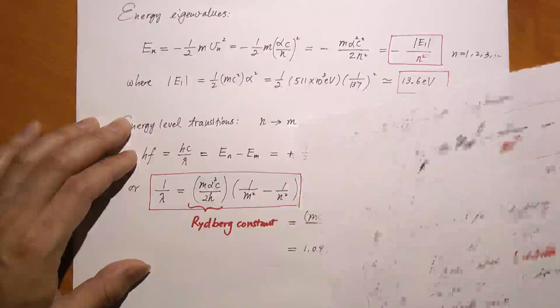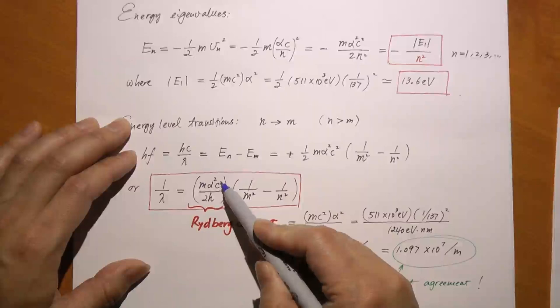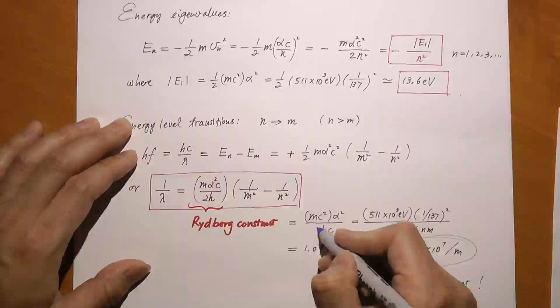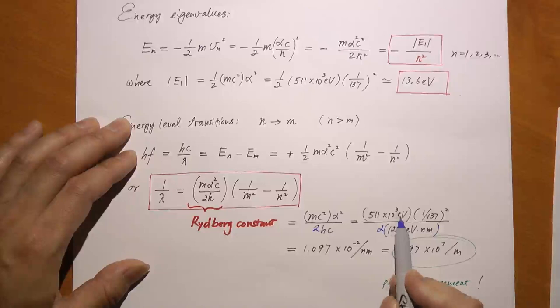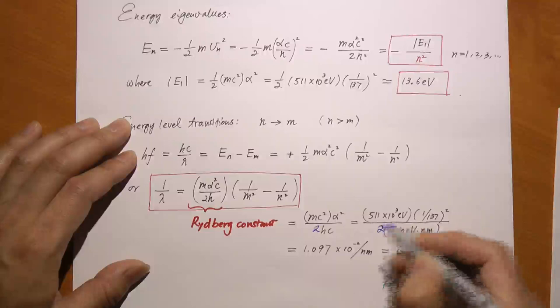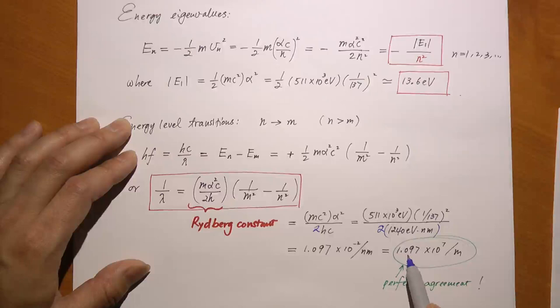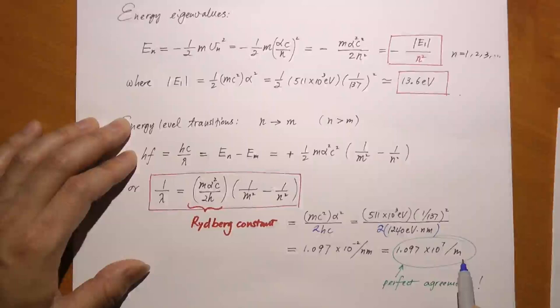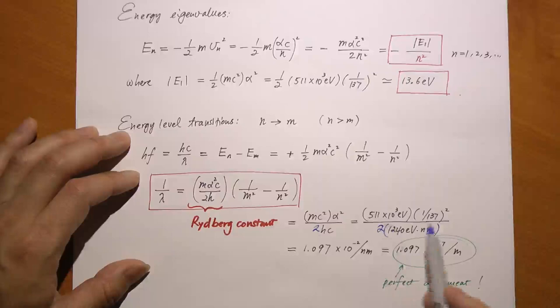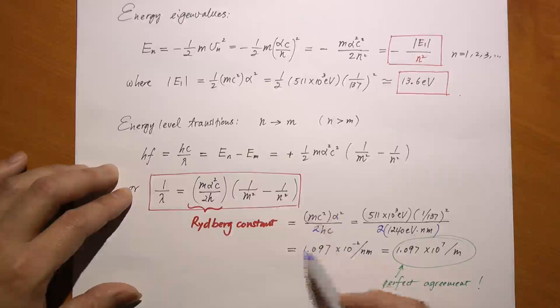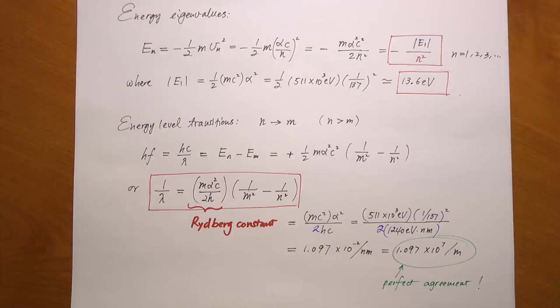The Rydberg formula was a purely empirical formula with no theoretical background—it just matched experimental values very well. Now we have a theoretical basis for it. We must verify that m·alpha²·c² / (2hc) really equals the Rydberg constant R_H = 1.097 × 10⁷ per meter. Our theoretical formula gives: mc²·alpha² / (2·h·c) = 511 keV × (1/137)² / (2 × 1240 eV·nm) = 1.097 × 10⁻² per nanometer = 1.097 × 10⁷ per meter. That is a perfect match with experiment, and with more significant figures the agreement extends to seven or eight decimal places.